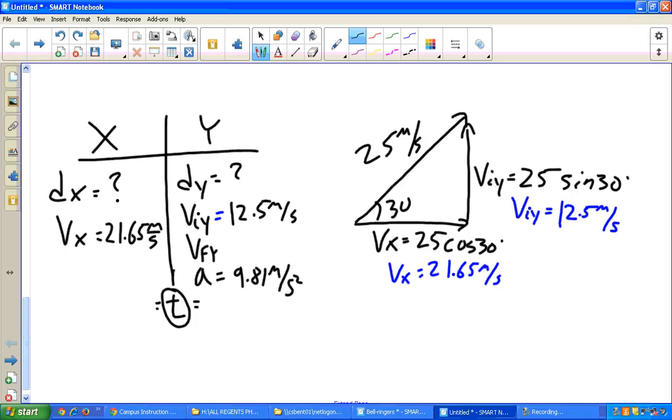And now I'm going to go ahead and label my unknowns. We're trying to solve for dx, we're trying to solve for dy, and we're trying to solve for time. The process of solving these problems is just figuring out one thing to solve for and then filling in the rest of the table.